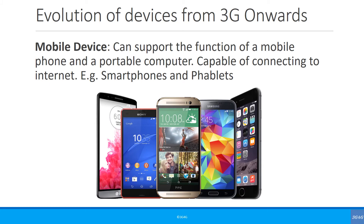Then from 3G onwards, mobile phones further evolved. Initially they were feature phones, but more than just feature phones — first with the back, then front cameras. Then the iPhone was introduced, which was one of the first smartphones, along with the other initial Android phones. So this concept of a mobile device was now a portable computer.